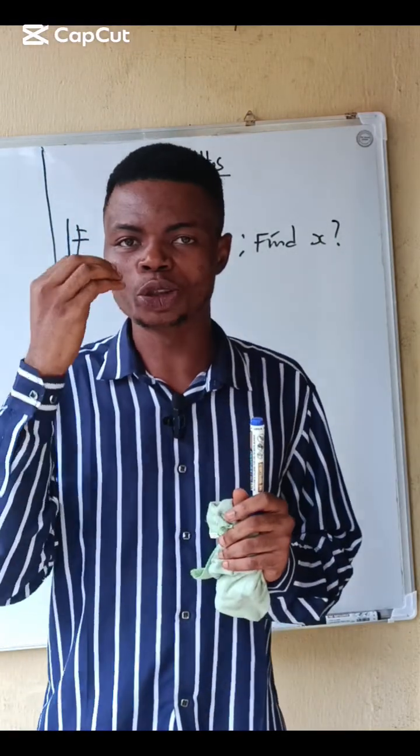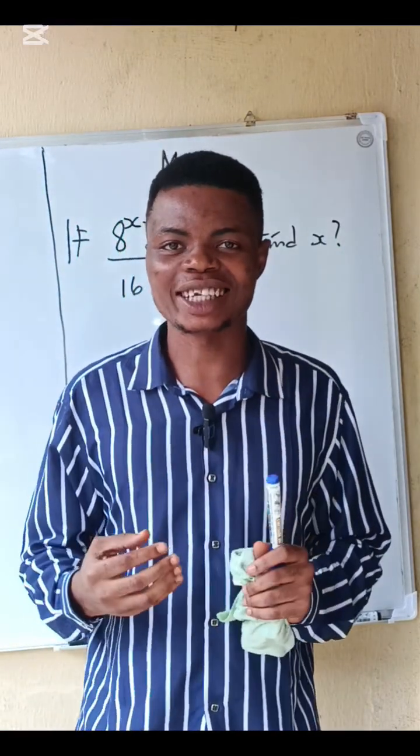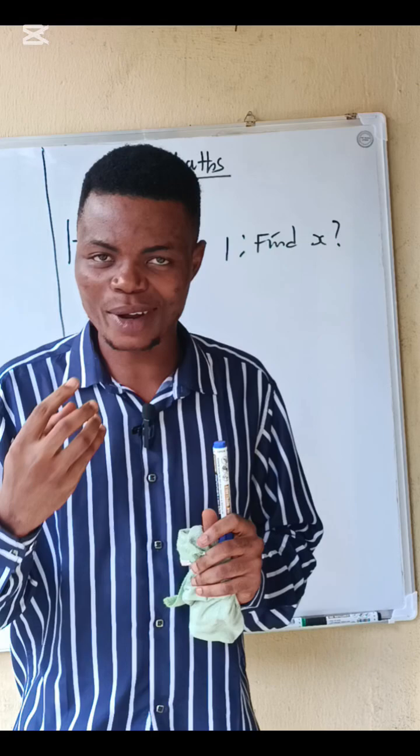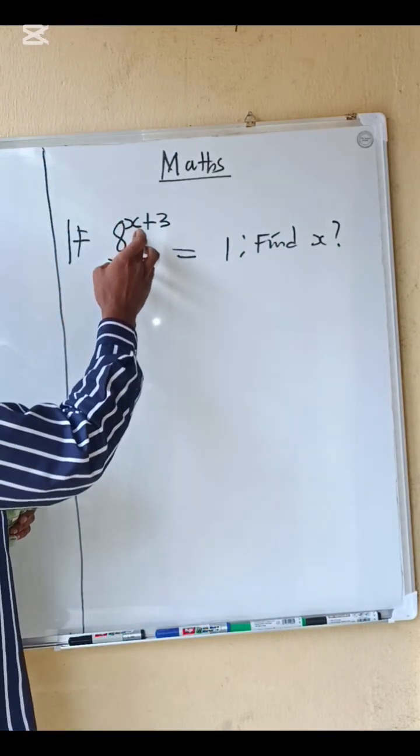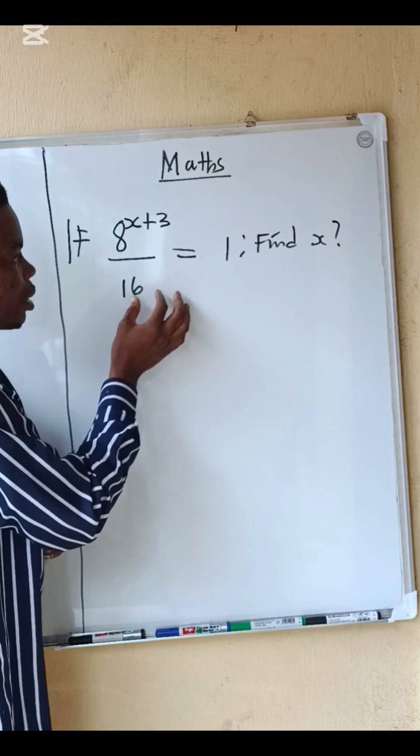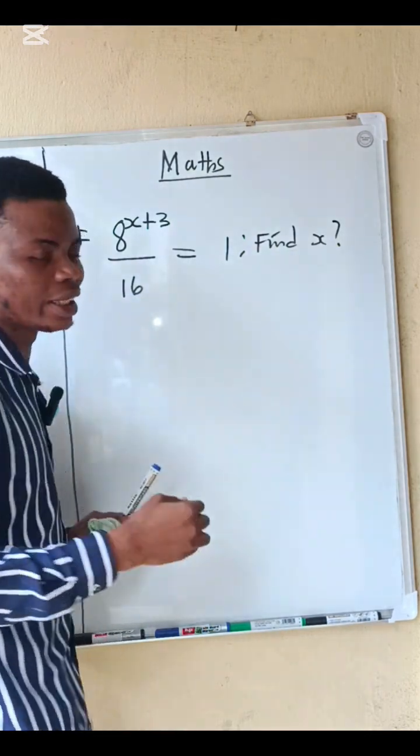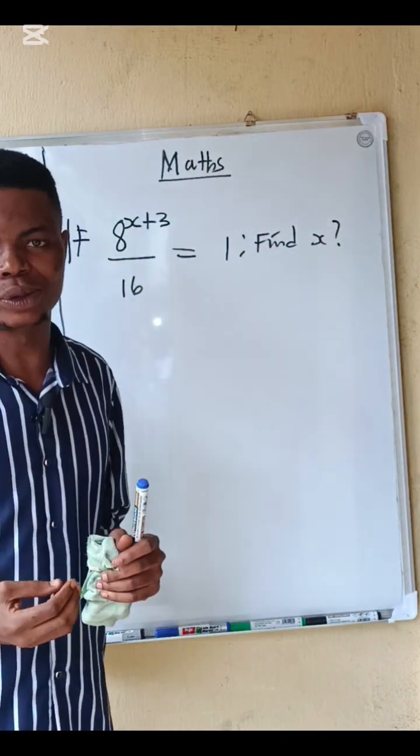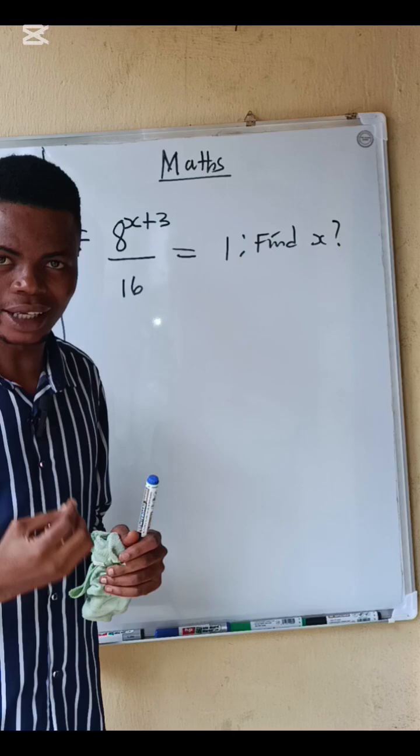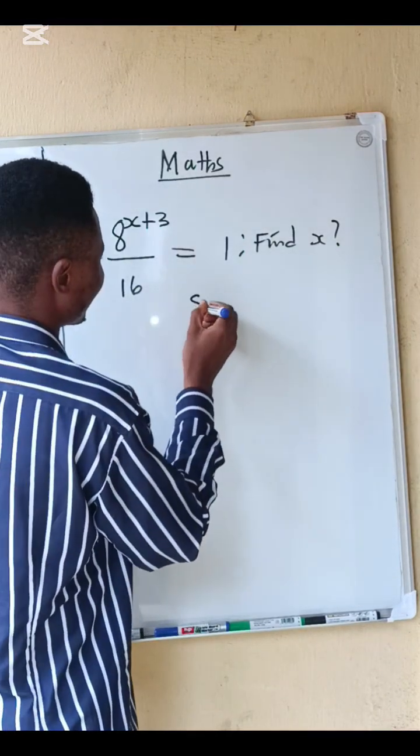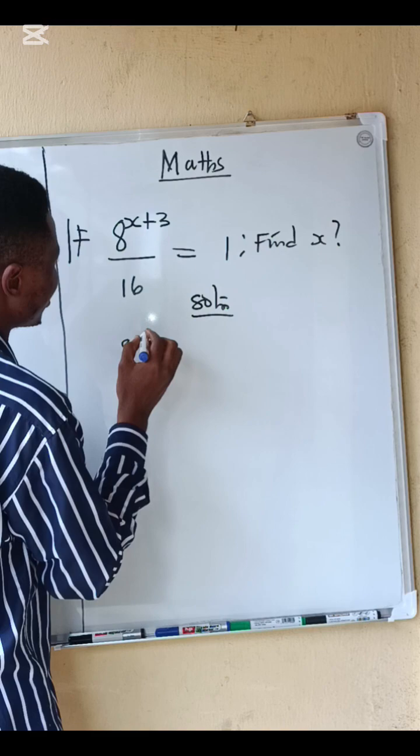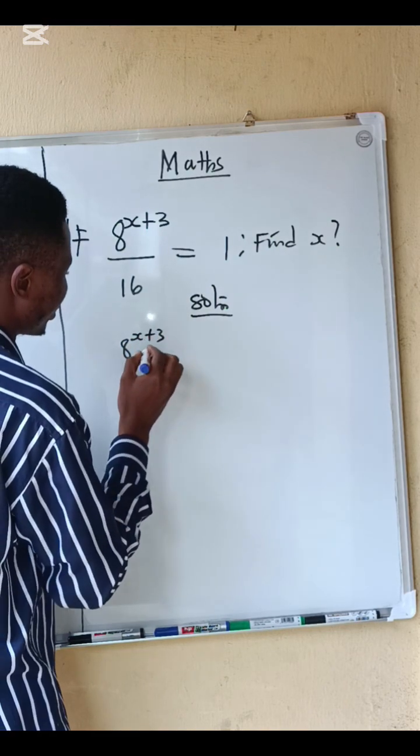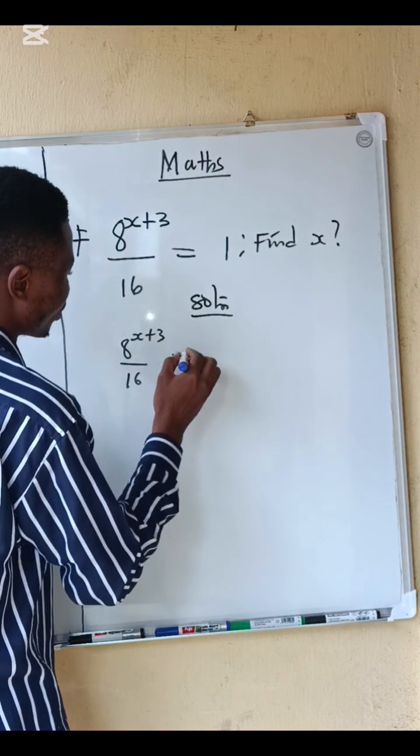Good day guys, today I want to show how to solve this simple exponential equation. The question says if 8 power x plus 3 divided by 16 equals to 1, find x. In this case, what do we do? Let me show the solution. We have 8 exponential x plus 3 divided by 16 equals to 1.